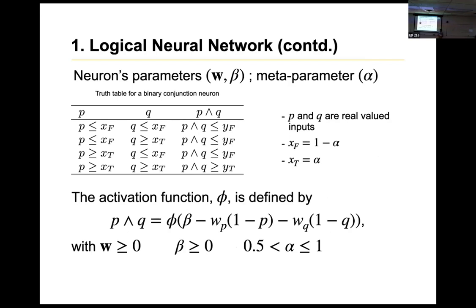Let's take a simple example. Say we have to train a neuron with a logical conjunction. Each neuron has parameters of weight vectors and bias, and there is also a meta-parameter. This is the truth table for the AND function. If we take a model to train this function, we need the activation function sigma, defined in a specific way. We try to minimize the loss for the training function. We have two neurons with their own constraints: the weight must be positive, the bias is positive, and it lies between 0.5 and 1. We can include a slack variable to completely cut off the input if needed.